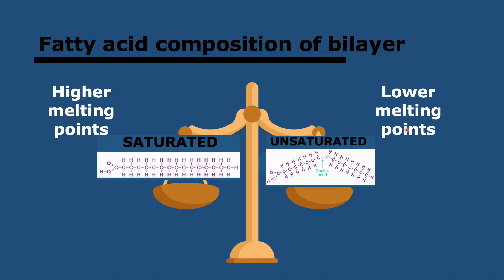The ideal ratio of saturated to unsaturated fatty acids normally depends on the temperature that a cell experiences. For example, fish from Antarctic waters have a higher percentage of unsaturated fatty acids because they live in a very cold environment.